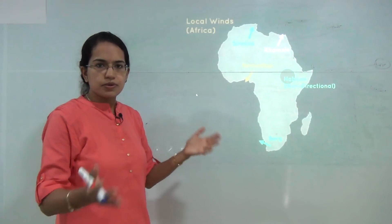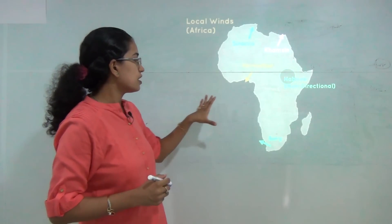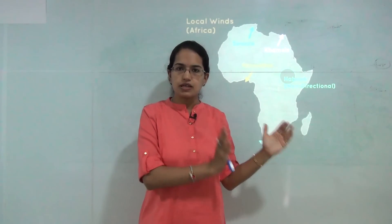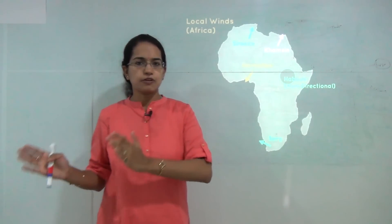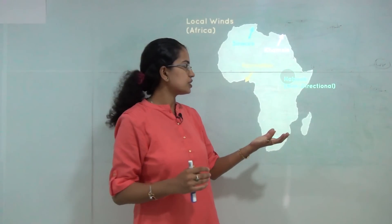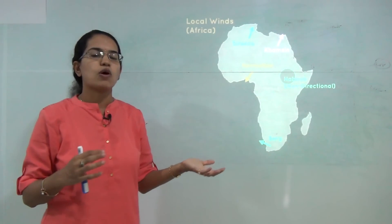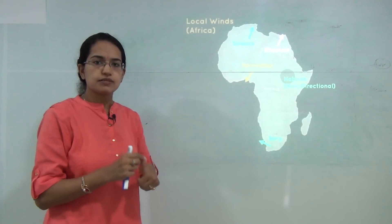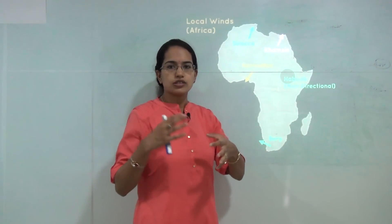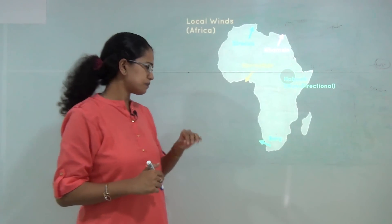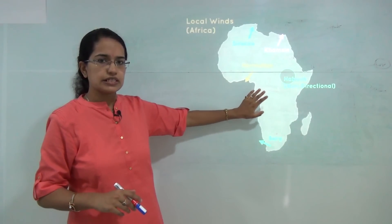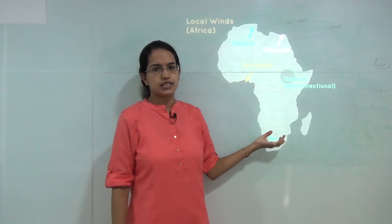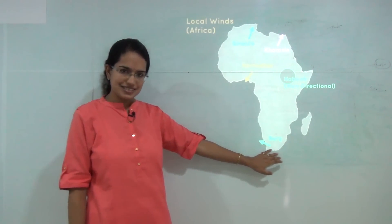For any exam question on the wind system, the key is to explain the difference between planetary or permanent winds and local winds, including the role of the Coriolis force and the pressure gradient force, and to explain the Hadley cell and Ferrel cell before proceeding. A complete list of local winds is provided below the video for reference and memorization. With this, we conclude the session on winds and circulation, with more climatology topics to follow.